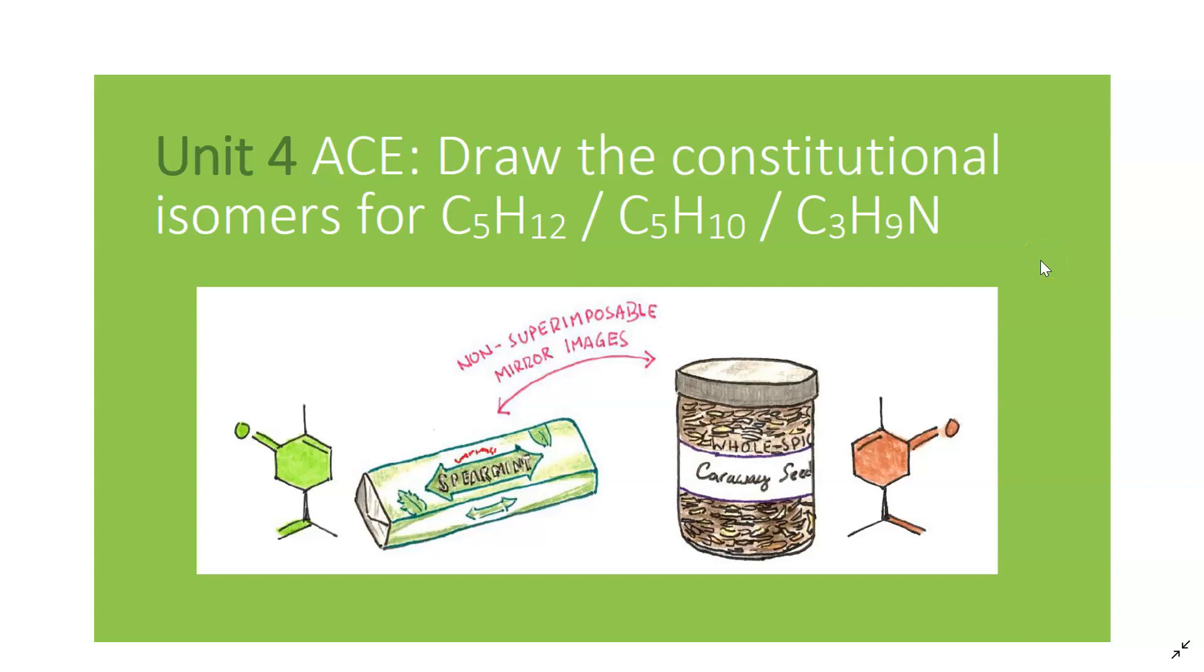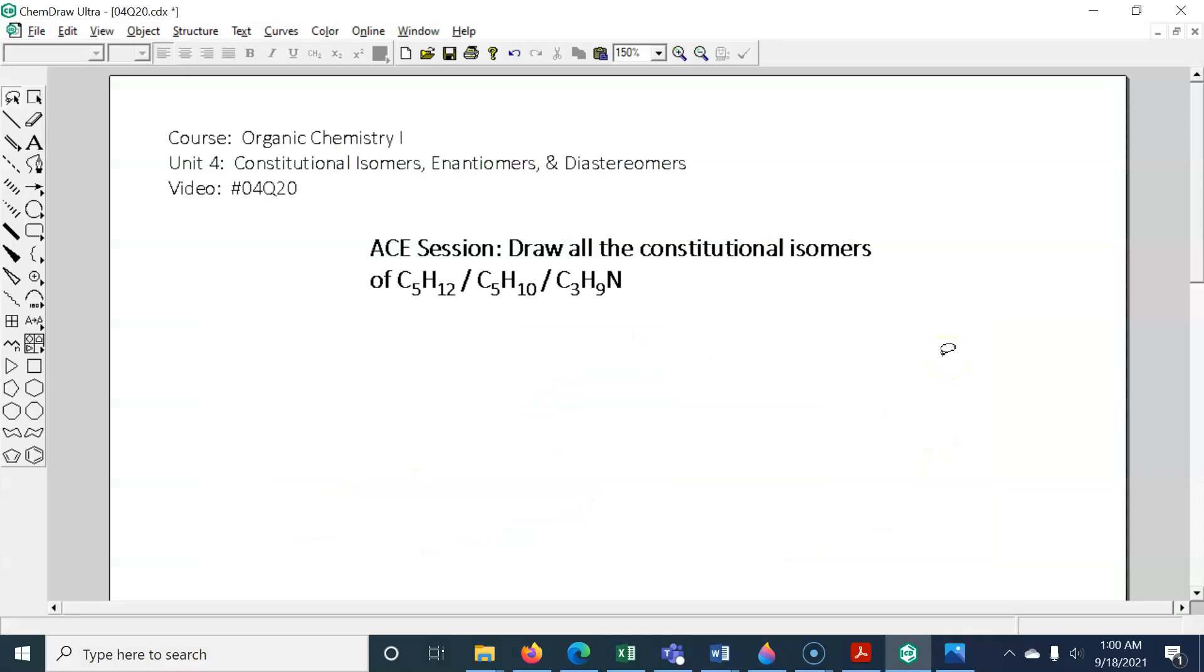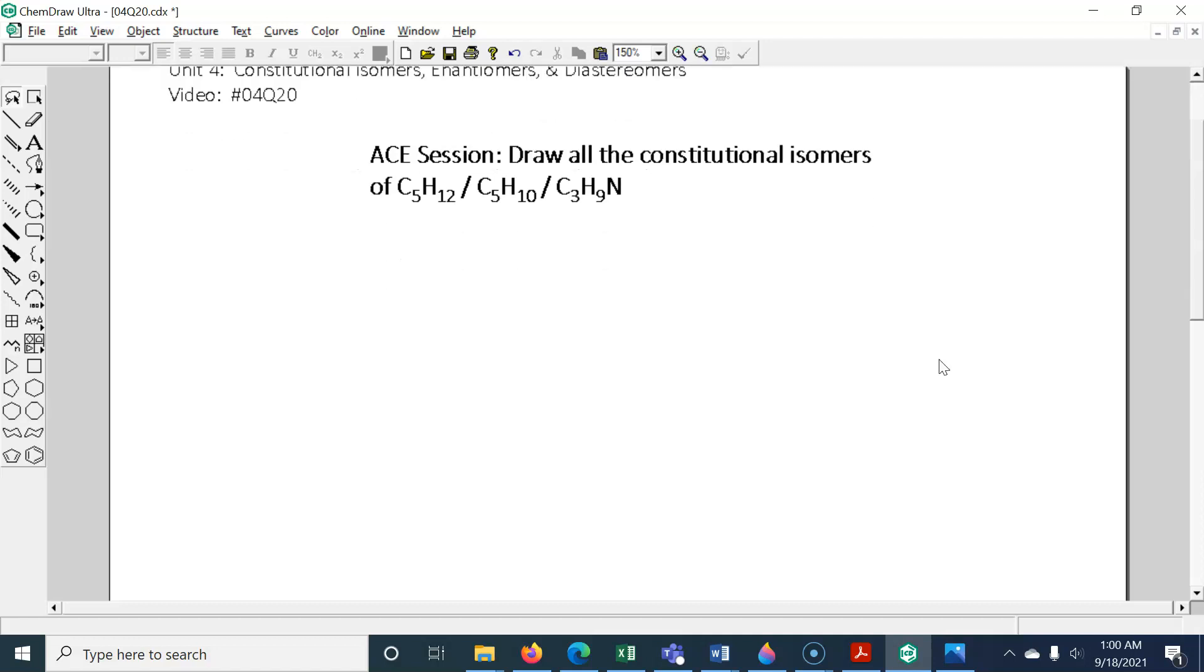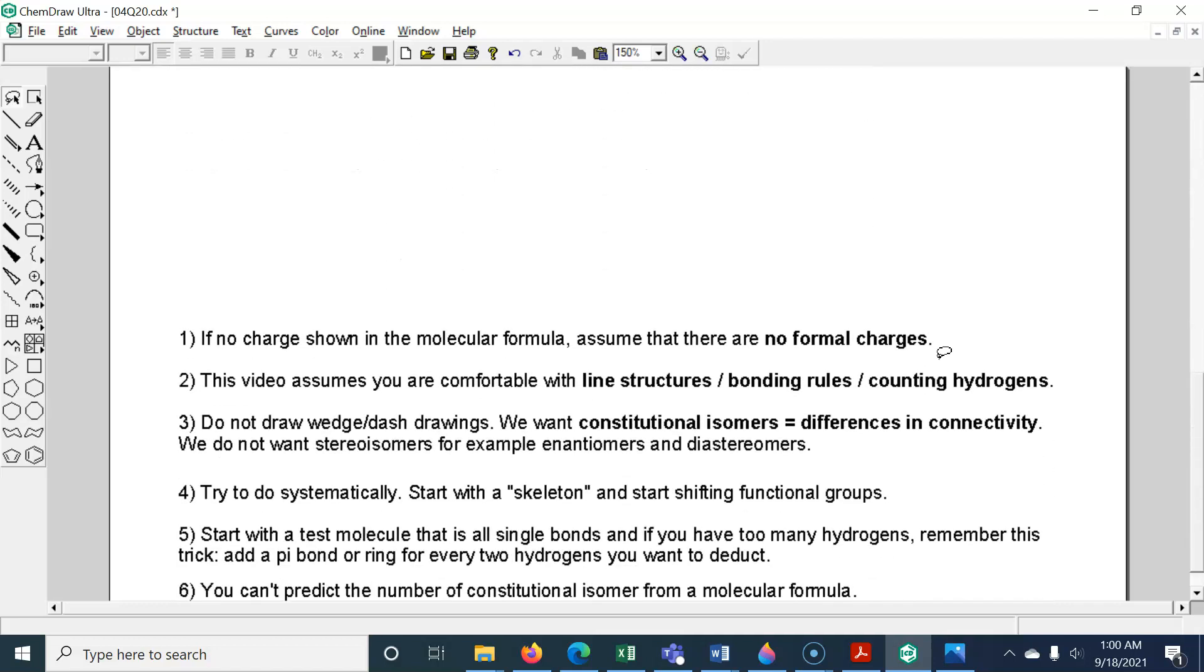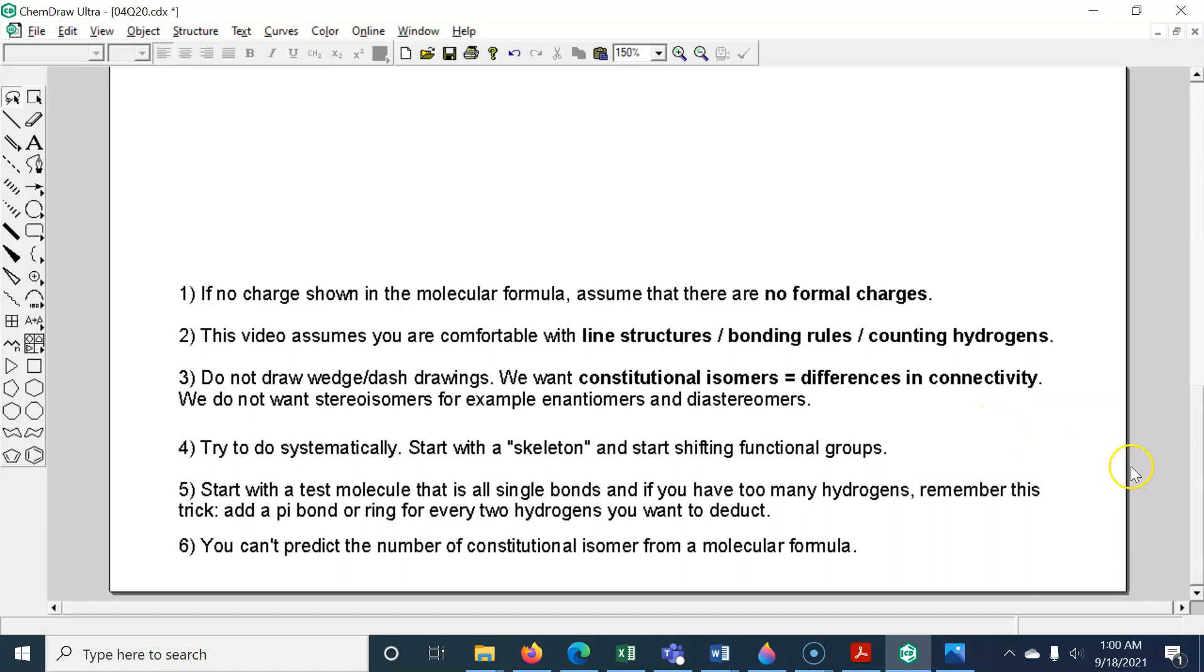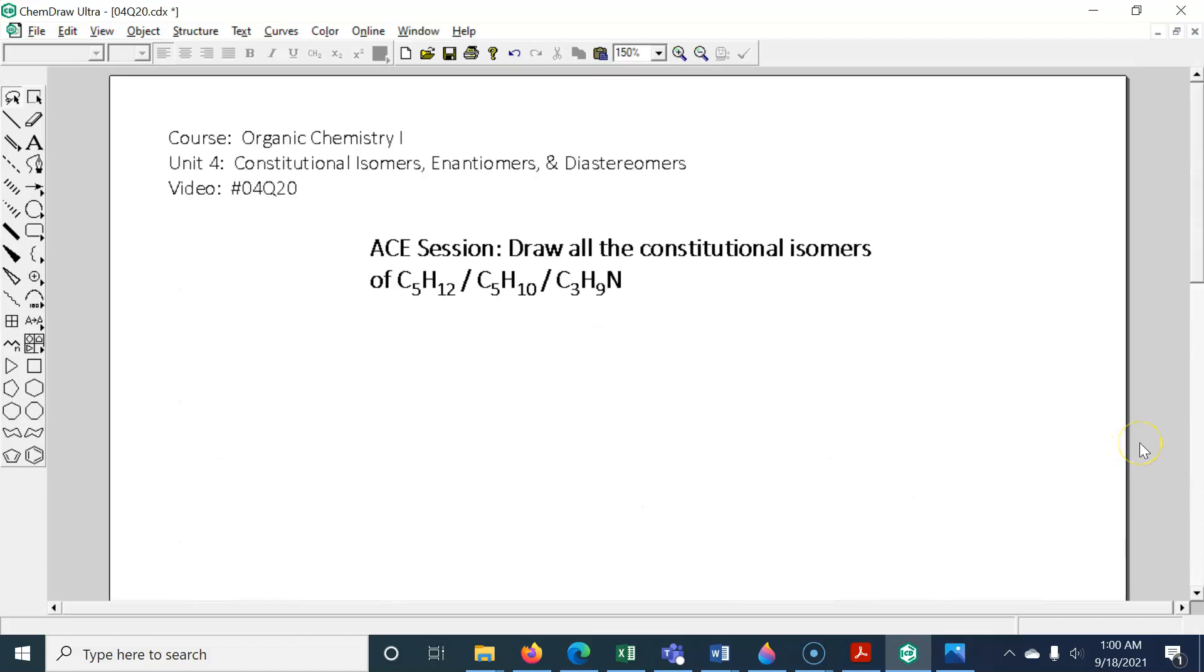Welcome again to another ACE session live from New Jersey. We are going to draw constitutional isomers for these three molecular formulas: C5H12, C5H10, and C3H9N. I still don't have my headset or document camera, and we are going to do this under 19 minutes. In a previous video I went over some rules of thumb. There are six of them. I'm not going to go over them here. I will put the link for that video in the description. Let's get started.